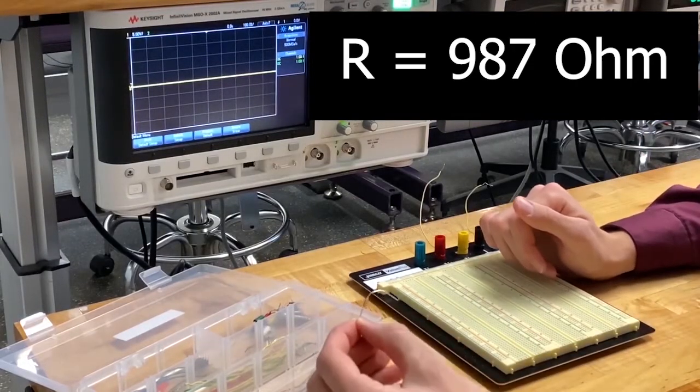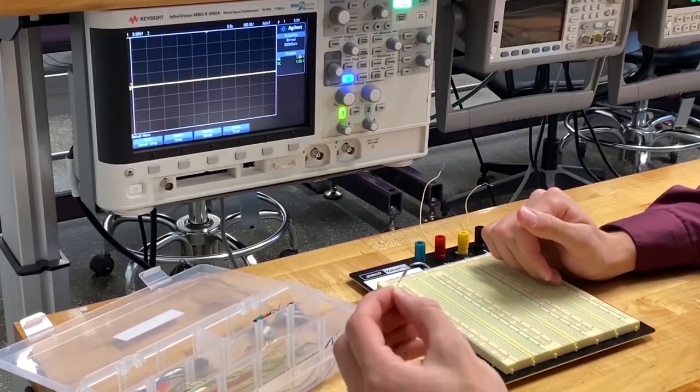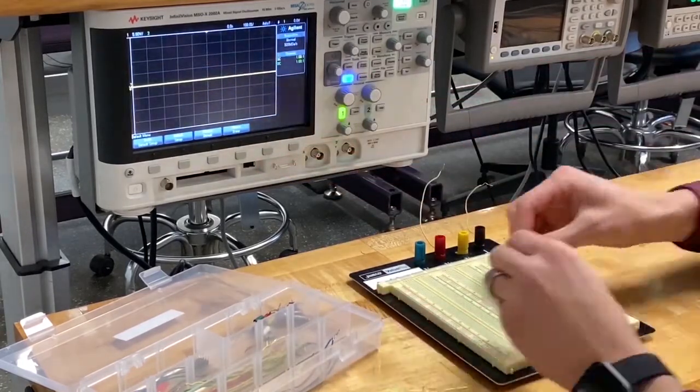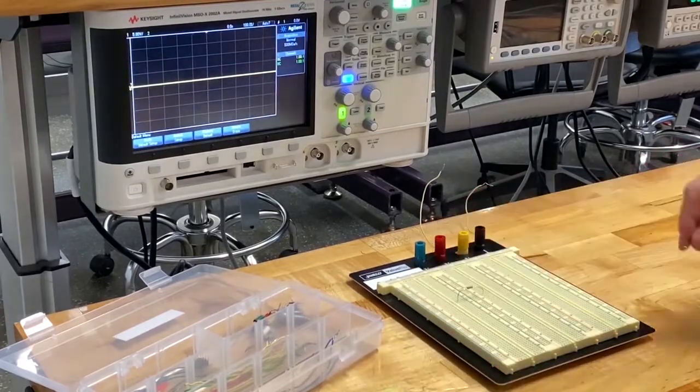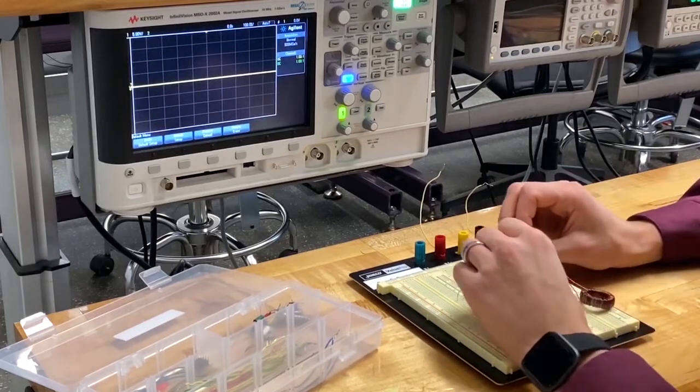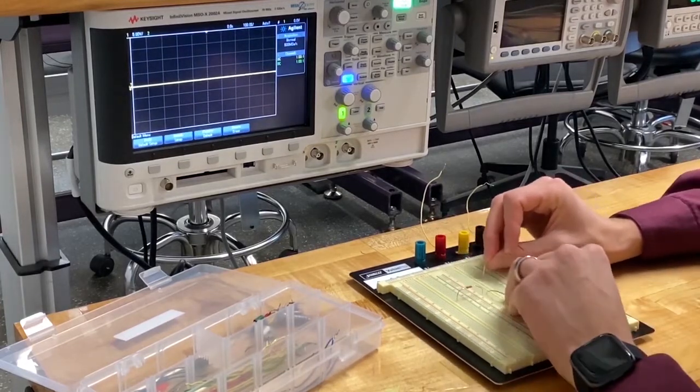Okay, so now that we have our resistor measured, we need to build a circuit out of this resistor and go ahead and hook it up to our oscilloscope over here. For our circuit, we just need to put our resistor in series with our inductor. So I'll do that really quick.